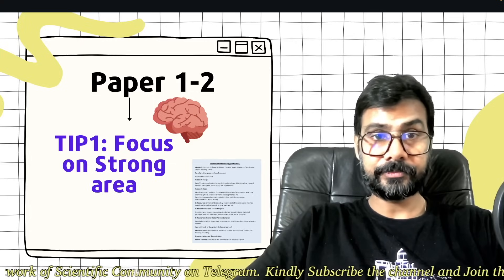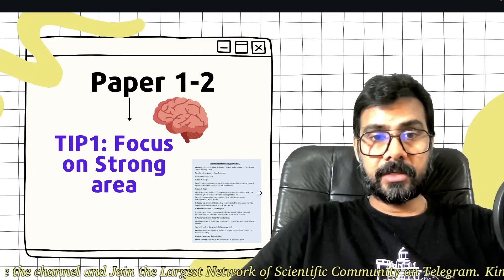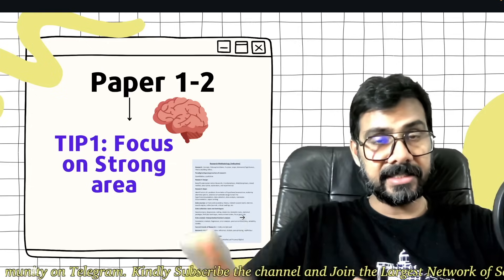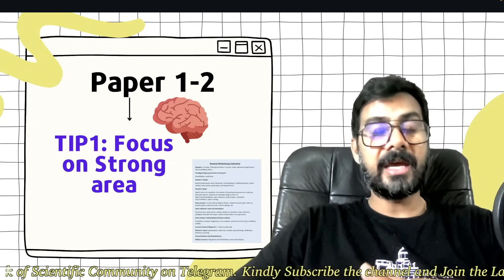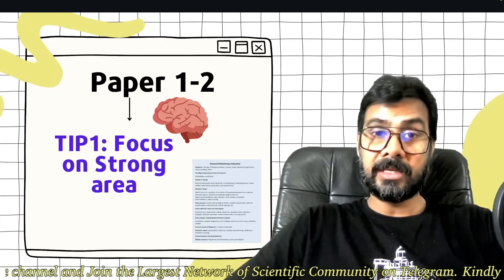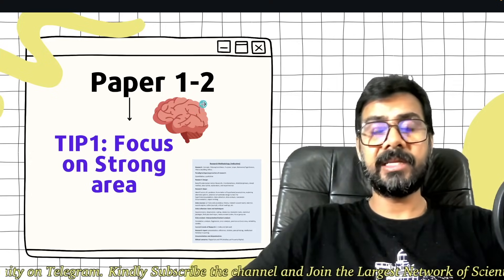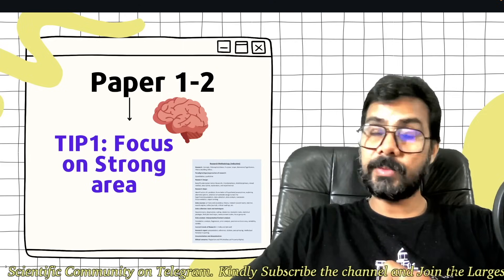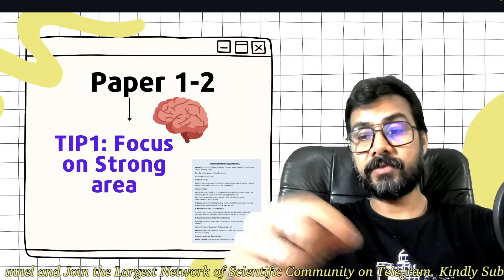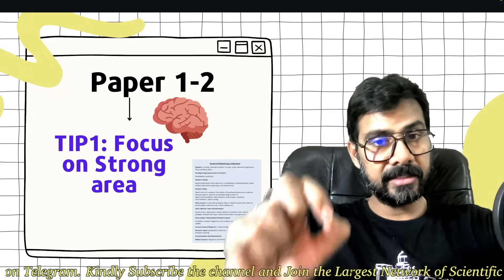The first tip is to focus on your strong area. If we talk about paper one, research methodology has research design, research essay, data source, data analysis, statistical tests, plagiarism, and different topics. Now you have to focus on the areas in which you have a strong command. For example, if you have very good command on sampling techniques or statistical techniques, when you attempt the paper, go through the questions where you know the answer, just attempt and move forward.